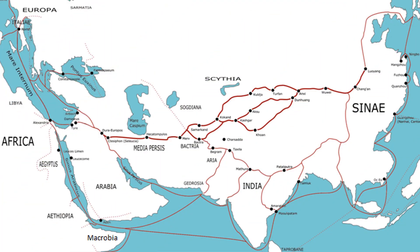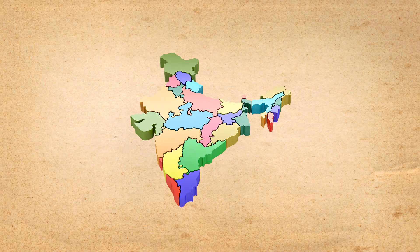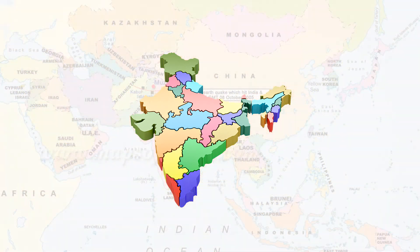India's contact with the world has continued through the ages, but relationships through land routes are much older than maritime contacts. India has 29 states and seven Union territories. India shares its land boundaries with Pakistan and Afghanistan in the northwest; China, Tibet, Nepal, and Bhutan in the north; and Myanmar and Bangladesh in the east.